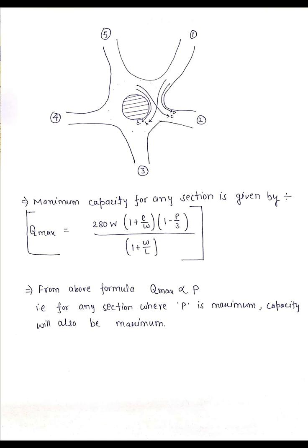From this formula we get that P, which is the weaving ratio, is directly proportional to maximum capacity. So what we need to do is not calculate the maximum capacity for each section, but we need to calculate the weaving ratio.